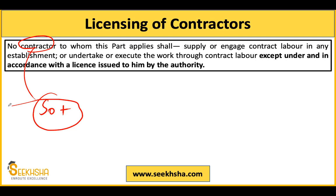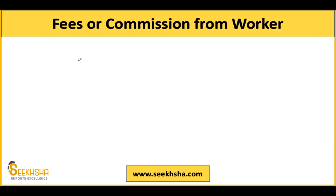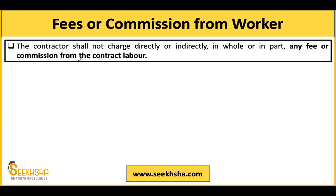No contractor can supply contract labor to an establishment or execute any work through contract labor unless he acquires a license issued by the required authorities. State government authorities will issue licenses for contract labor, and only after acquiring this license can the contractor take up work. This is an important provision to remember.